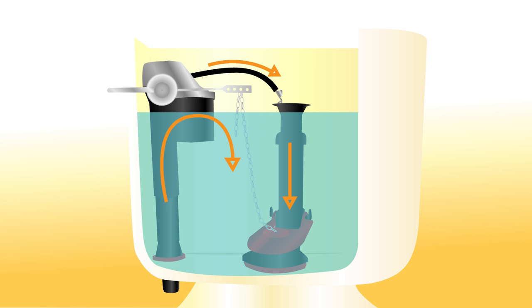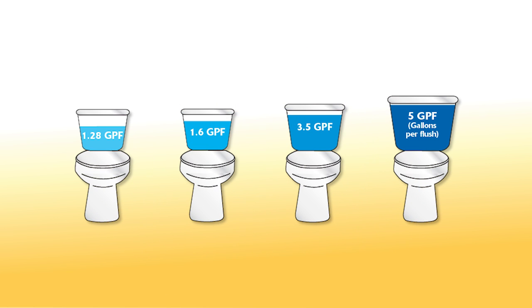Once the tank is refilled, the float lifts and stops water from flowing into the tank. Different water ratios are required in the bowl and tank depending on the toilet model.